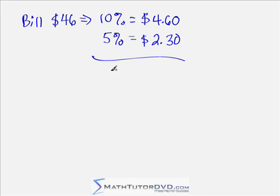So ultimately, 15% tip is going to be $4.60, $2.30, add them together, we will get $6.90. Just adding them together. So you can do this in your head. $4.60, cut it in half, $2.30, add it together, $6.90.